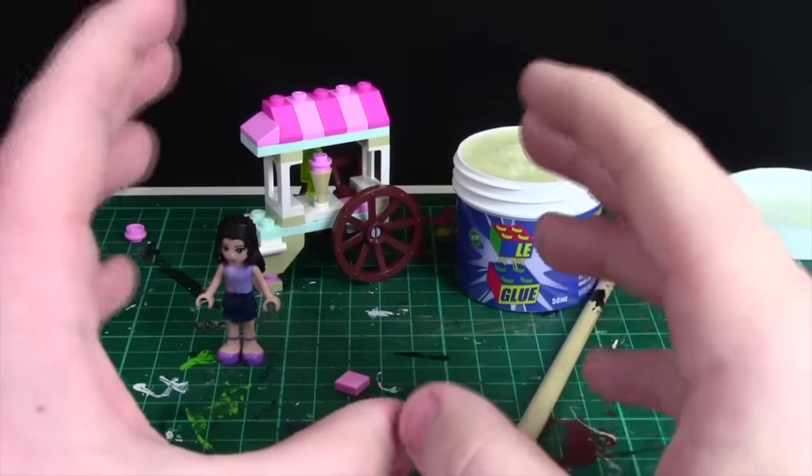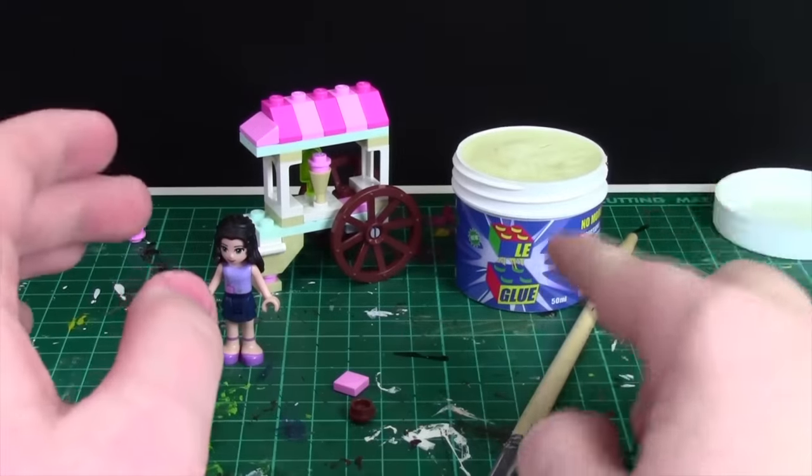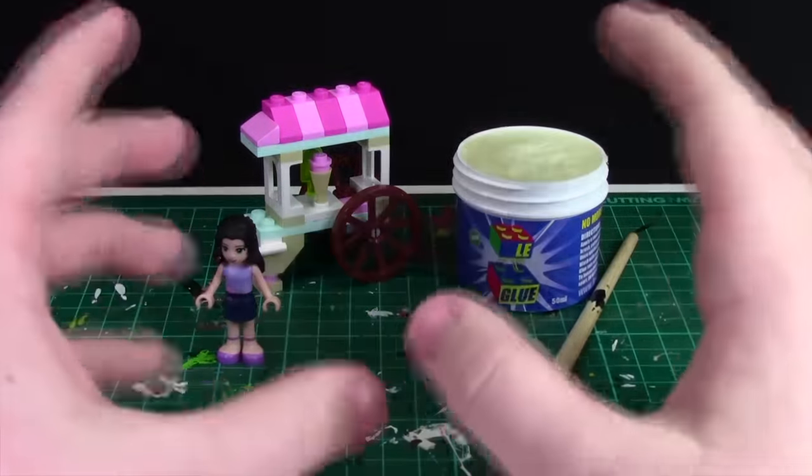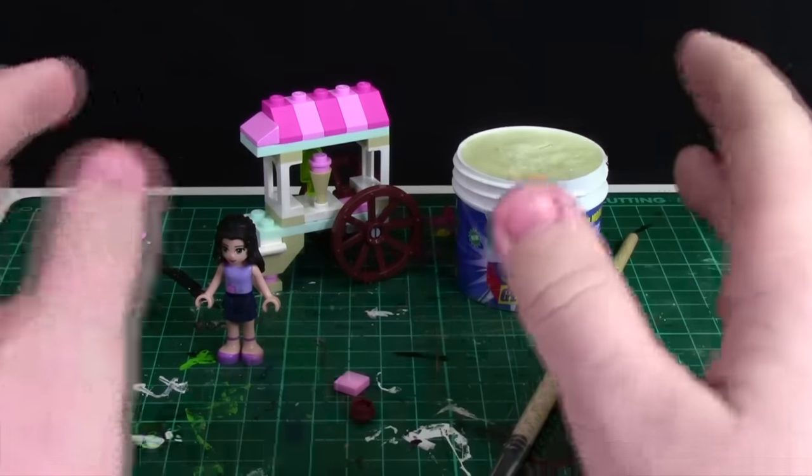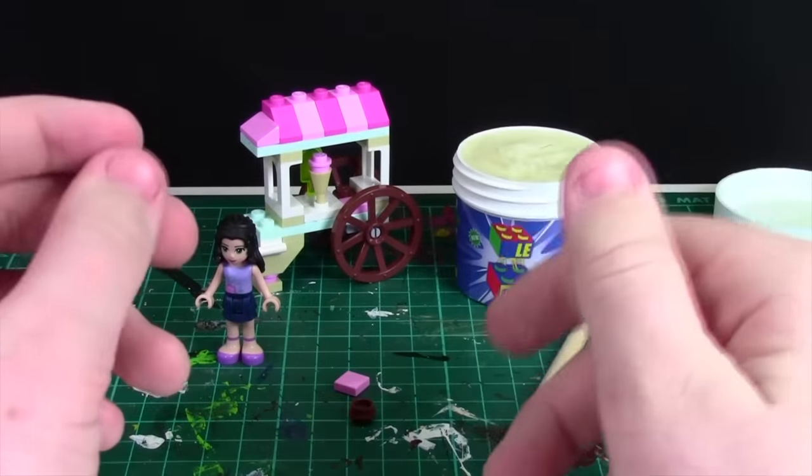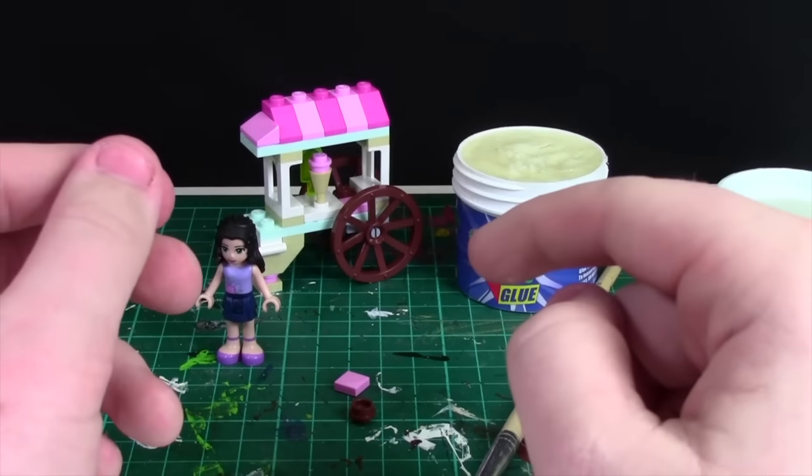Now that the Lego bricks have been glued, I'm going to leave them for 24 hours. That's what it suggests on the bottle to let them dry. It says it'll cure in an hour and completely be dry in 24, so that's what I'm going to do. See you in about one second, aka 24 hours.